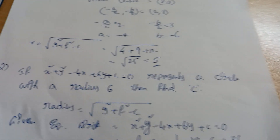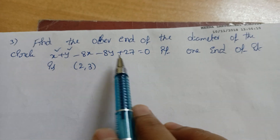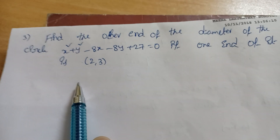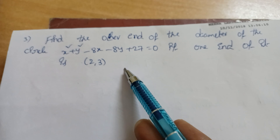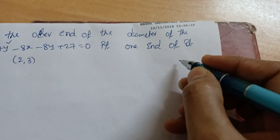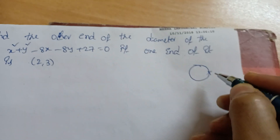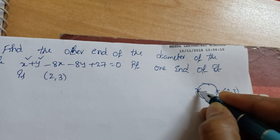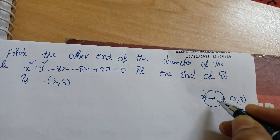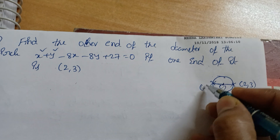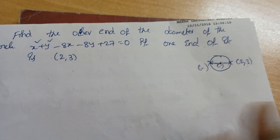Next question: find the other end of the diameter of a circle if one end is given. One end is (2, 3) — find the other end. The key idea is that a diameter passes through the center. So first find the center of the circle, then use it to find the other end.